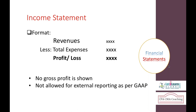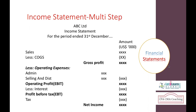A single-step income statement is not allowed for external reporting under generally accepted accounting principles, so corporates must use a multi-step income statement. Any financial statement prepared by a corporate should include: the name of the company, name of the statement, the period of reporting (e.g., 'for the period ending 31st December'), and the reporting currency with a rounding-off policy.